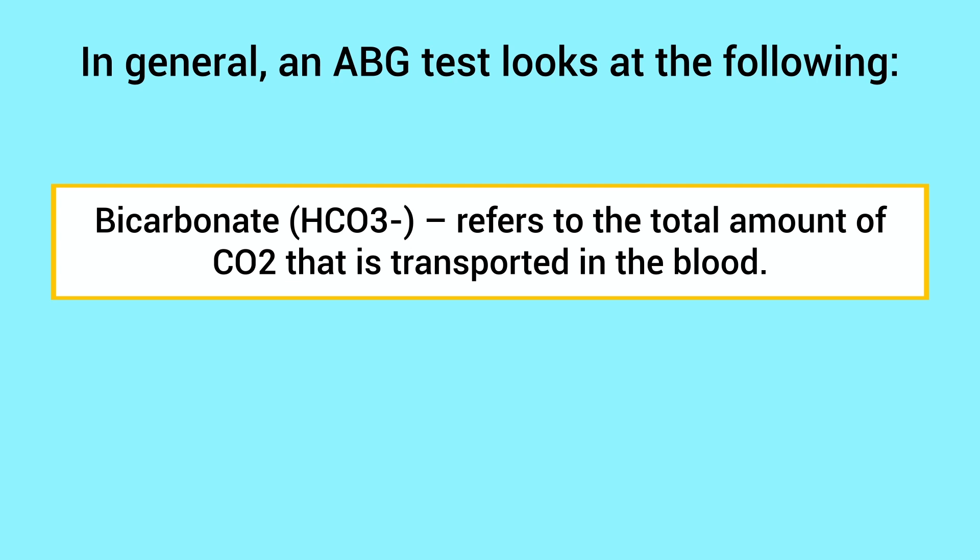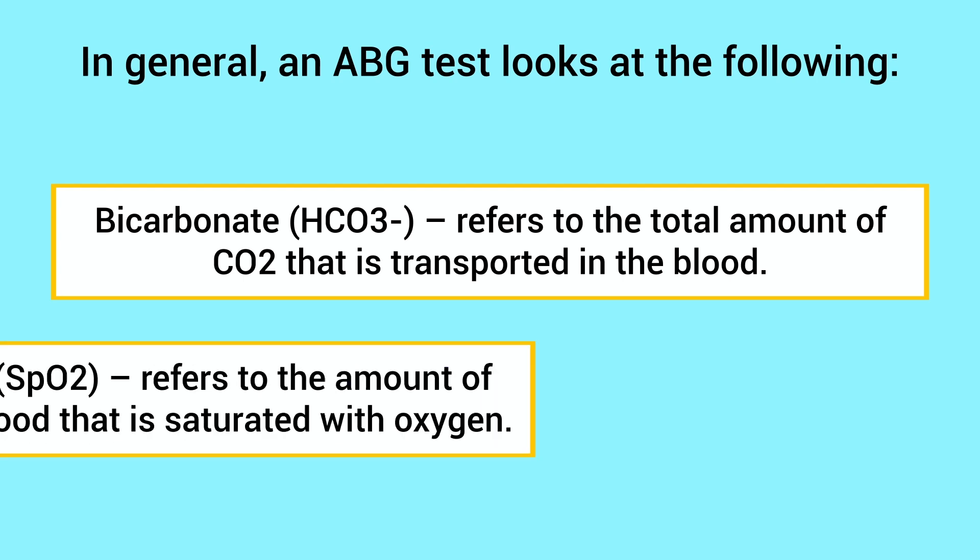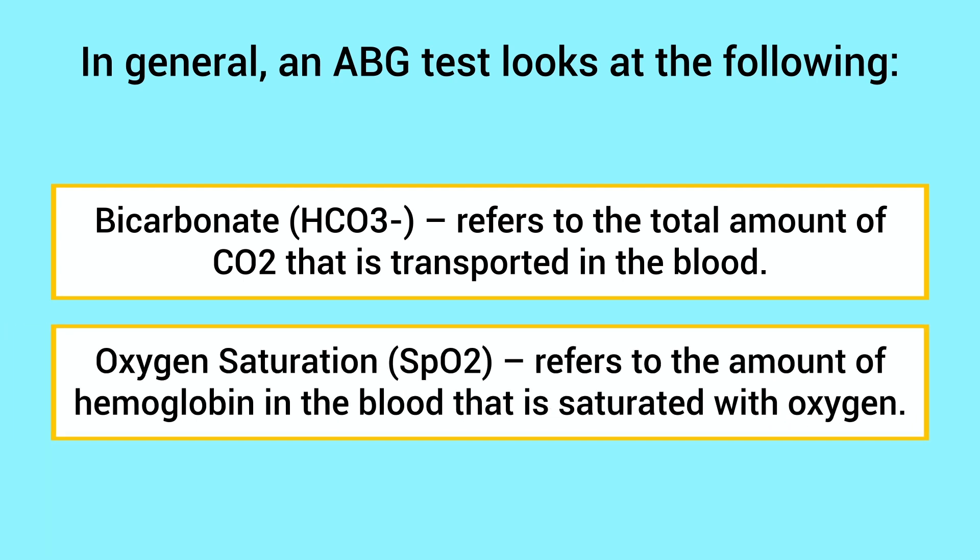You also have bicarbonate, or HCO3, which refers to the total amount of CO2 that is transported in the blood. An ABG test also looks at the oxygen saturation, or SpO2, which refers to the amount of hemoglobin in the blood that is saturated with oxygen. This is why the blood sample must come from an artery instead of a vein.